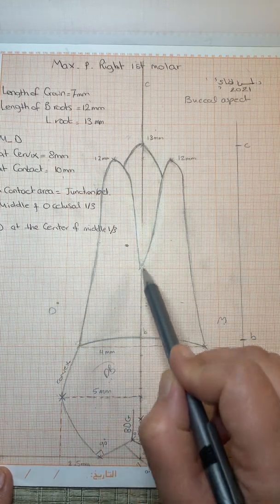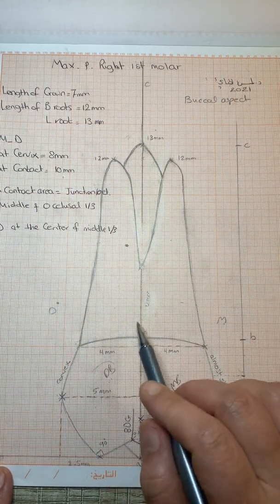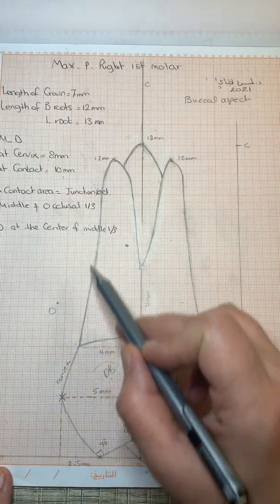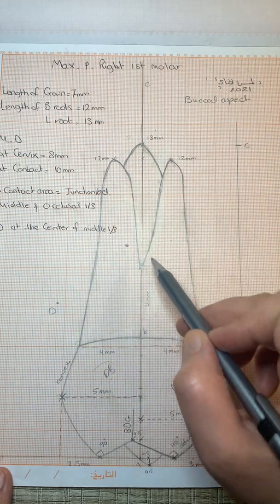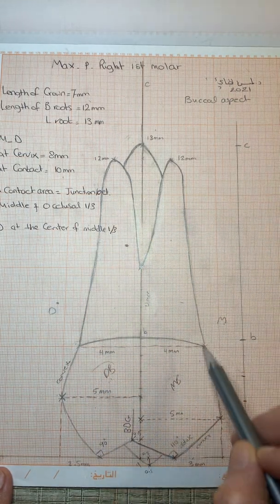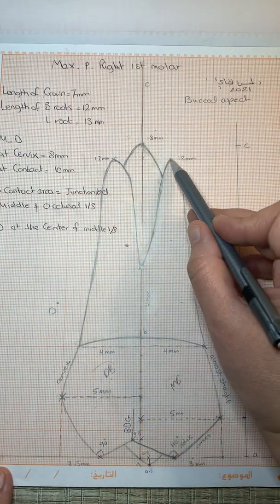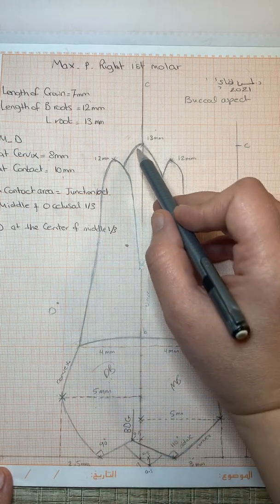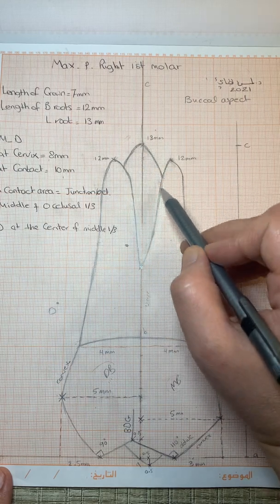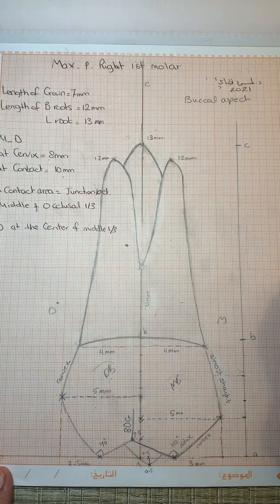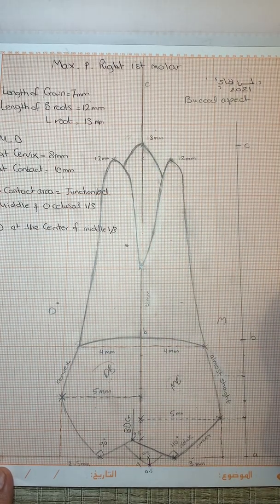The furcation area is four millimeters from B. When drawing the roots, they remain within the confine of the crown, tapering with rounded ends, and the lingual root is one millimeter longer than the buccal roots.